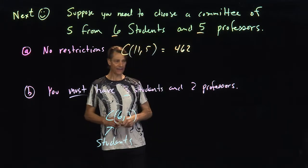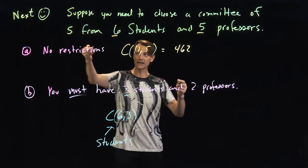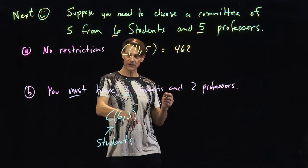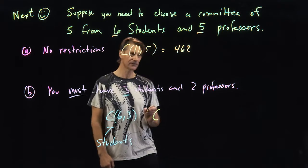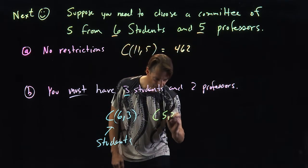Now, we have two professors we need, right? Because we need a committee of five. And we picked three of the students. So there's two left over. How many ways can we pick two professors from five? This is five choose two.